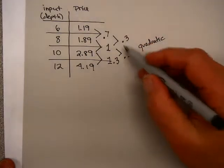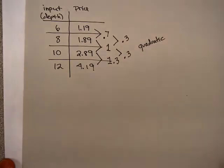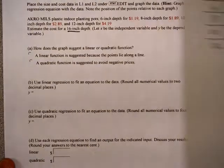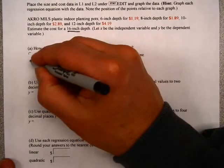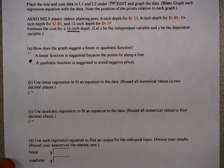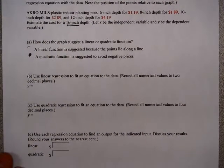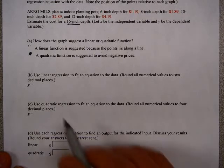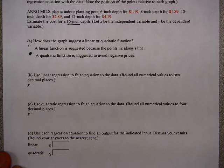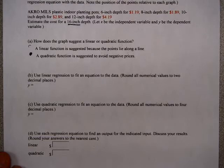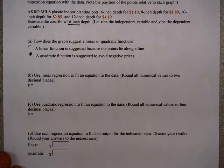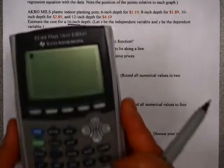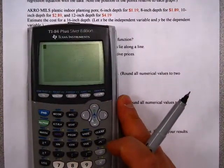So this strongly suggests, it indicates, that this is a quadratic function. So I'm going to mark quadratic function in this case. But then it asks me to use linear regression to fit an equation to the data, round all numerical values to two decimal places, and also use a quadratic regression to fit the equation to the data. If you are unfamiliar with how to do this on your calculator, I'm going to show you the TI-84.